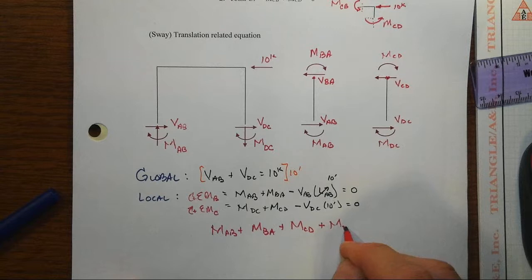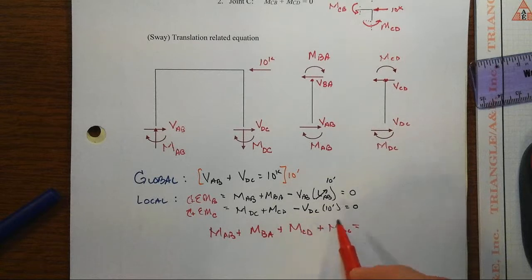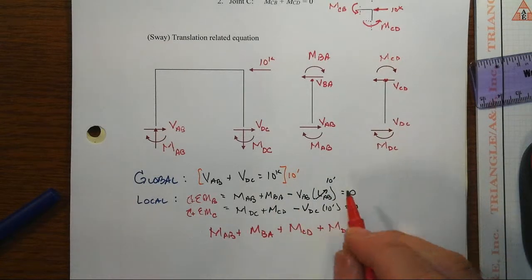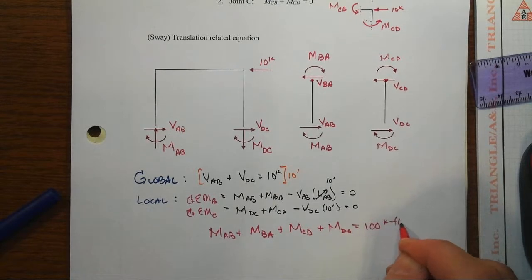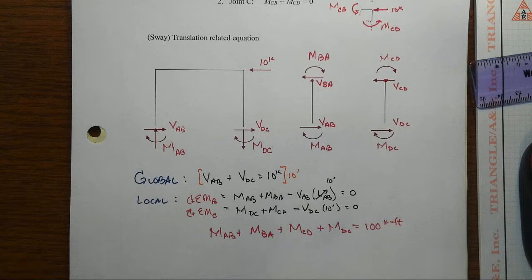And that's not going to equal zero, that's going to equal then 10 foot times 10 kip or 100 kip feet.